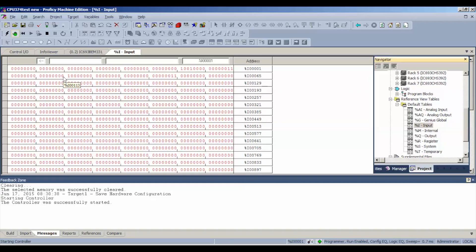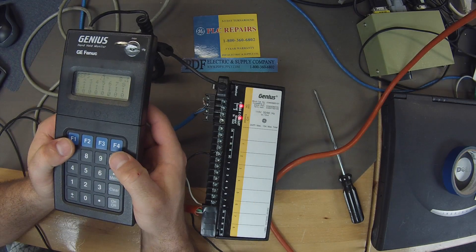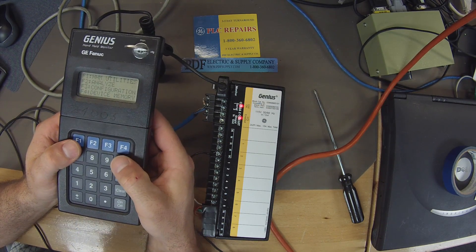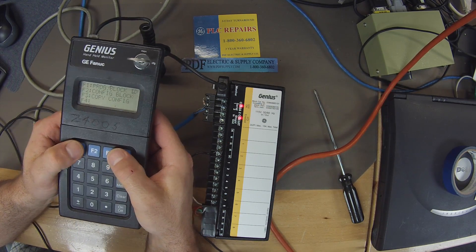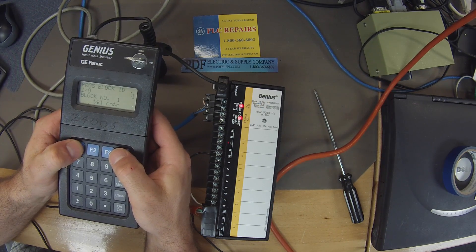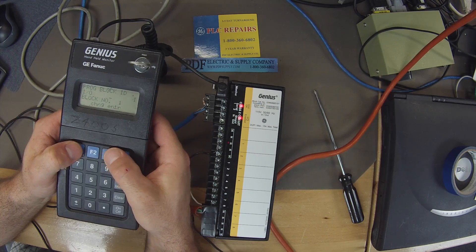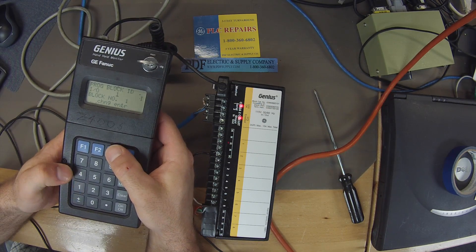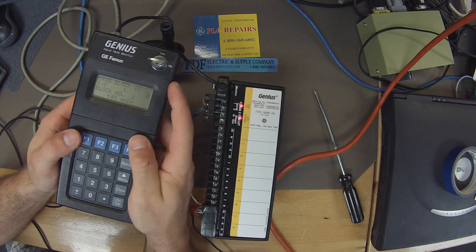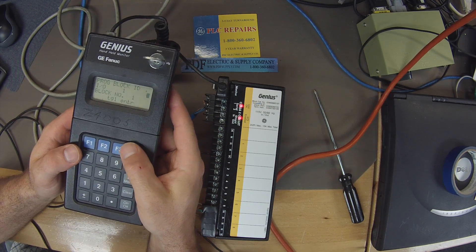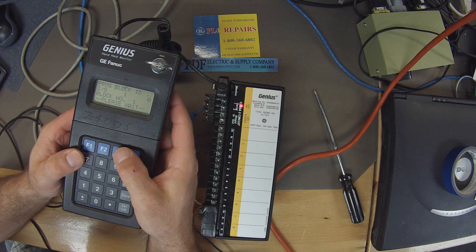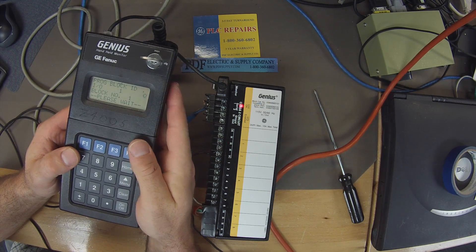Next thing, in the handheld monitor, I'm going to go back to home, F3 for configuration, F1 for program block ID, F1 for reference, enter, one, enter, and then toggle, F2, to output. You should have the Q there, then we hit enter. It's going to ask you to wait while it configures all eight outputs.